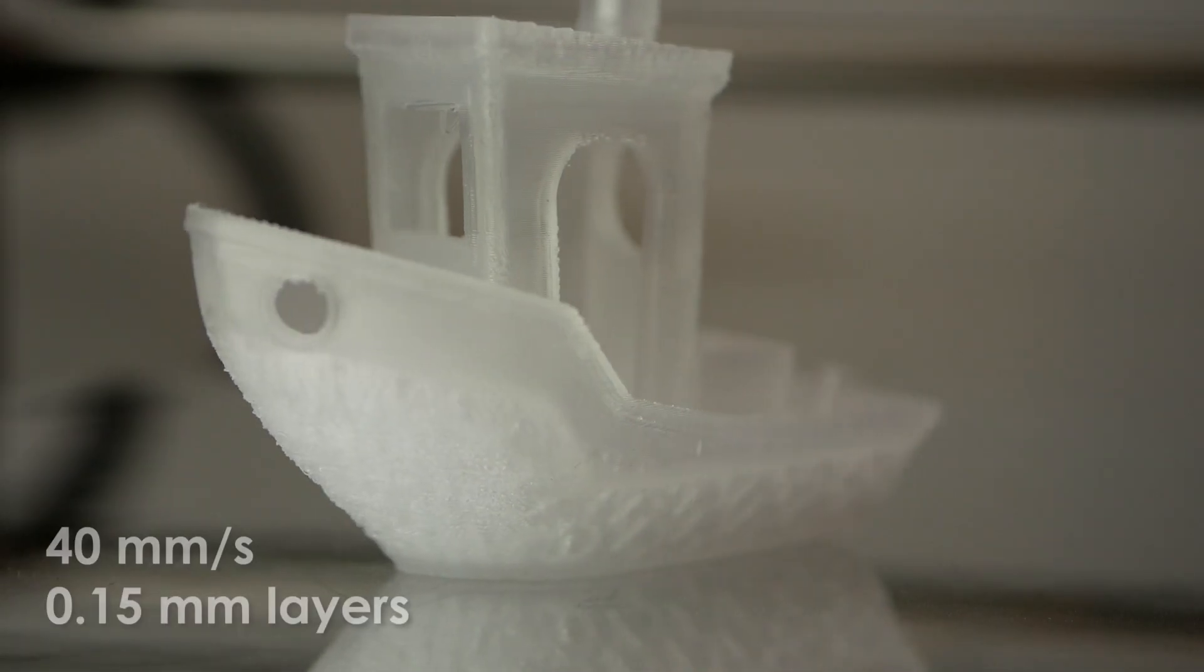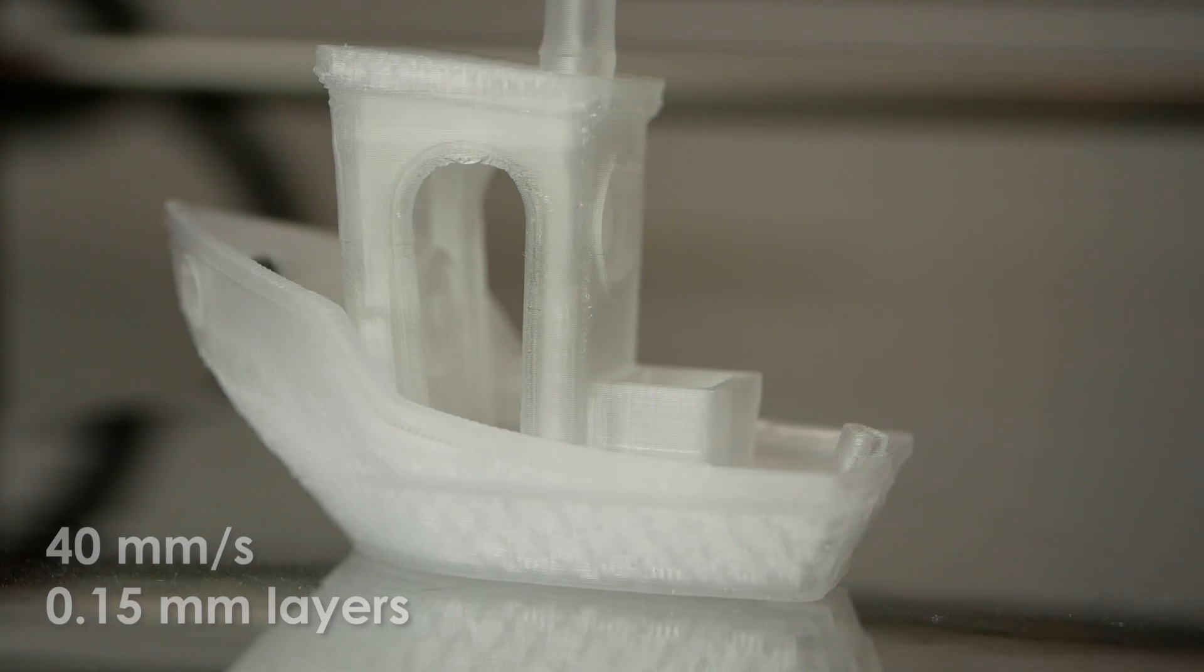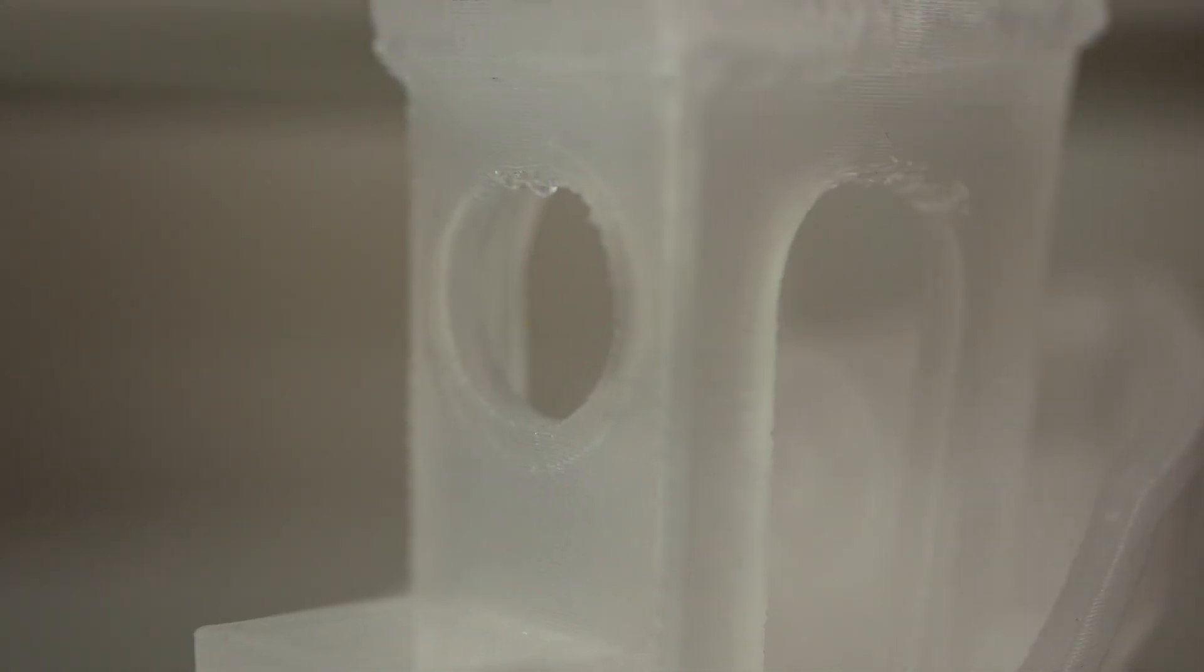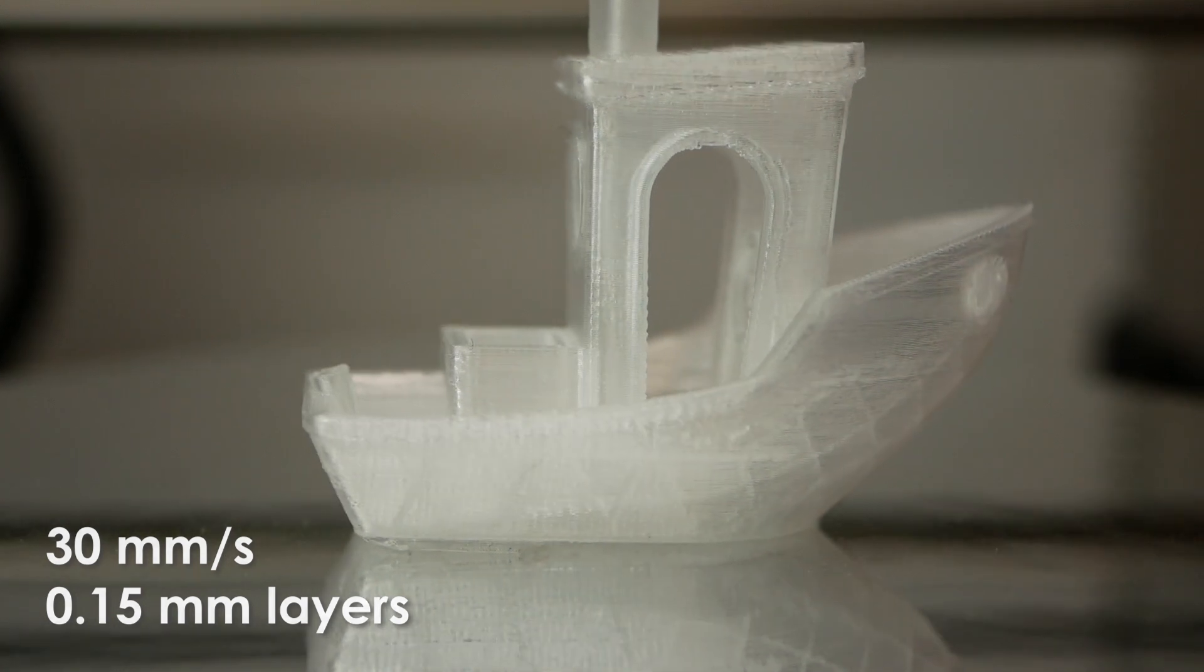The 3D Benchy still came out quite nice, but you can definitely see the quality problems at overhangs and bridges. I already printed all of the parts at only 40mm a second and noticed that printing even slower to increase the cooling time can improve the print quality a bit.